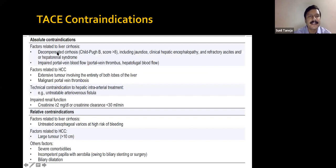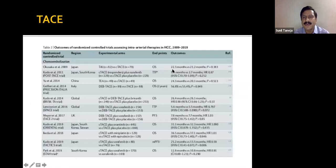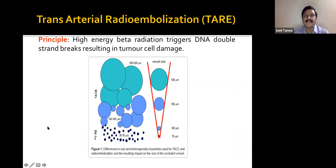Absolute contraindications for TACE include decompensated cirrhosis with jaundice, hepatic encephalopathy, ascites, or renal dysfunction; impaired portal vein blood flow; extensive tumor; and malignant main portal vein thrombosis. Relative contraindications include very large tumor, severe comorbidities, and biliary obstruction. Overall five-year survival with TACE combined with other procedures or systemic therapies is around 20-30%, offering marginal but meaningful survival benefit.